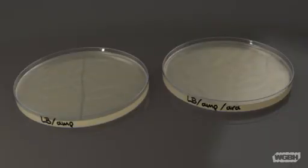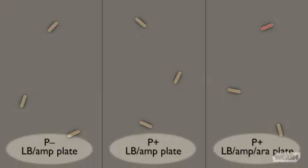Bacterial samples are now put on agar plates to test for successful transformations. The plate on the left contains the antibiotic ampicillin alone, and the plate on the right contains ampicillin and the sugar arabinose. On the left is a negative control plate where the transformation reaction was done without any plasmid. In the middle is another negative control where transformation was carried out with plasmids, but where the gene of interest will not be expressed since the growth medium lacks the arabinose inducer.